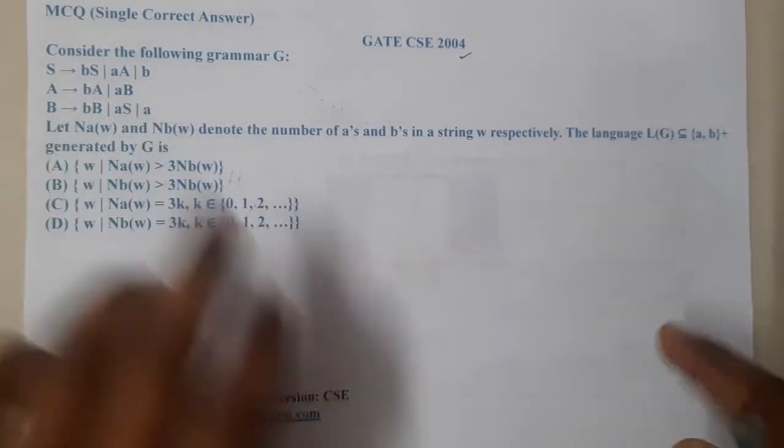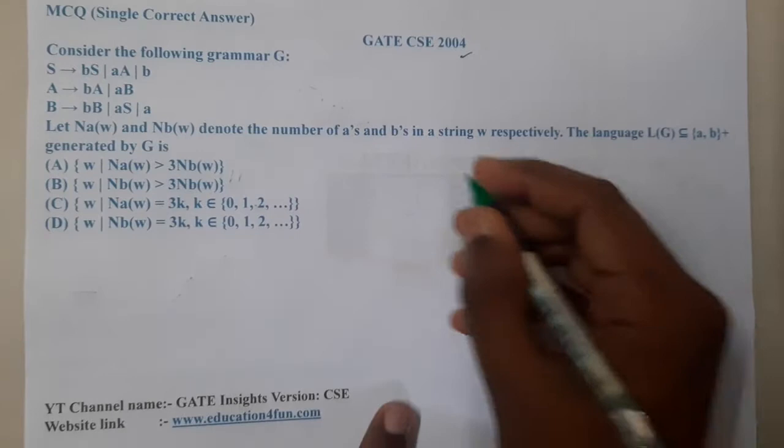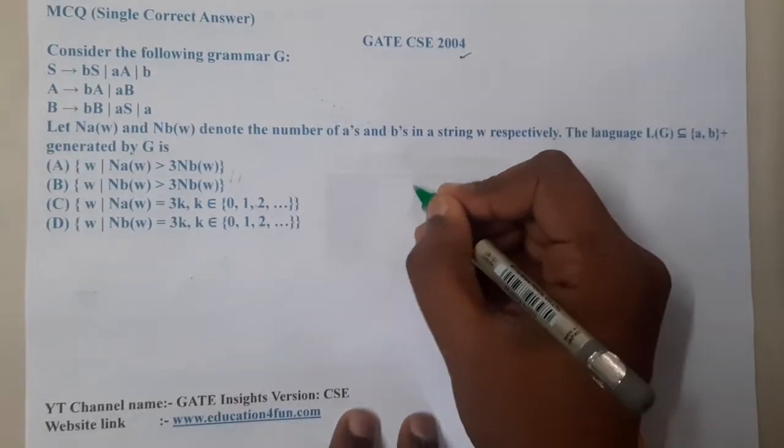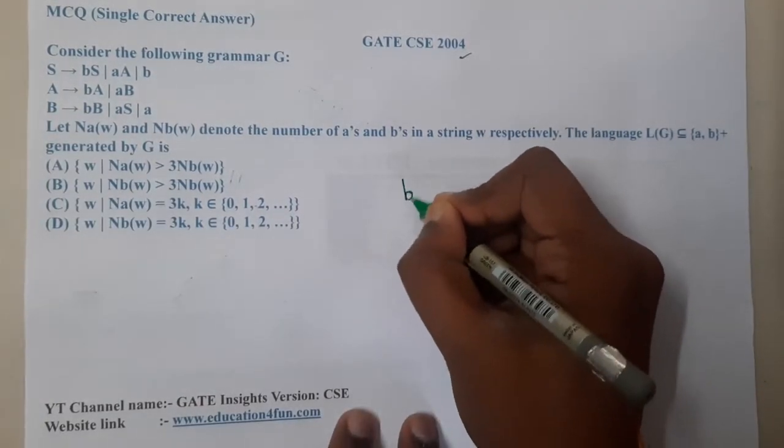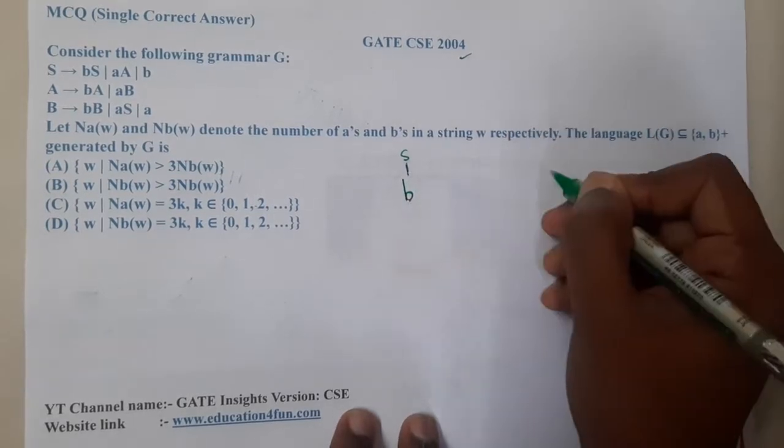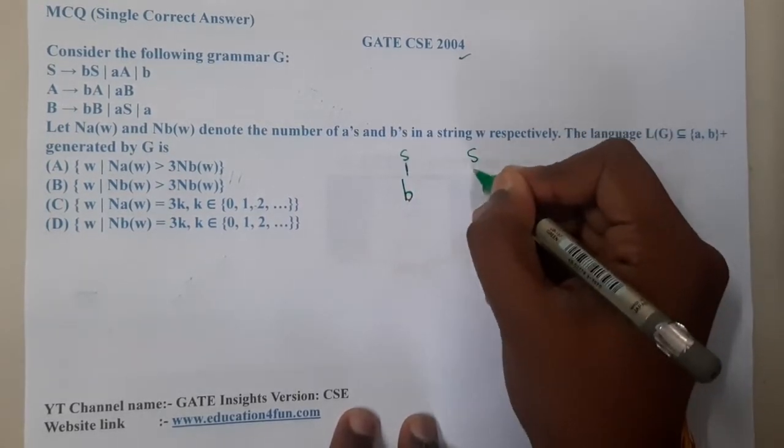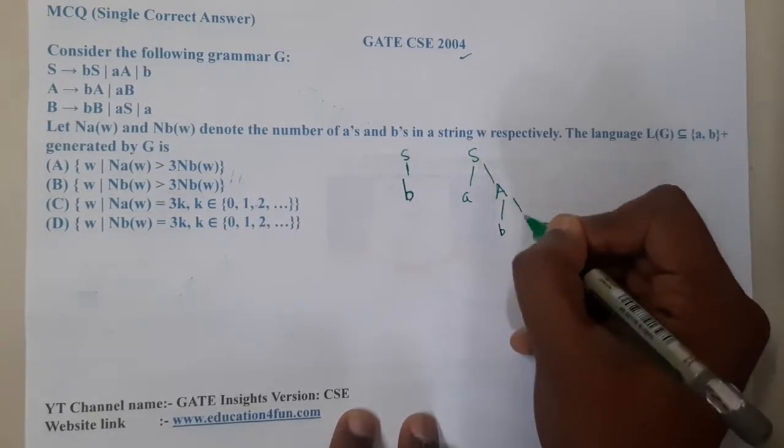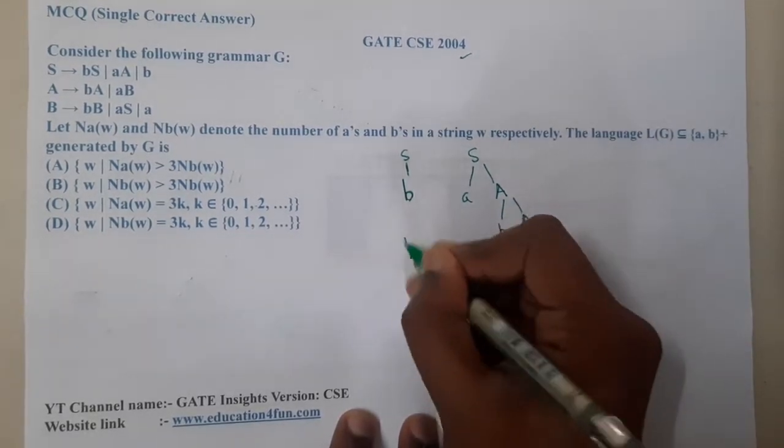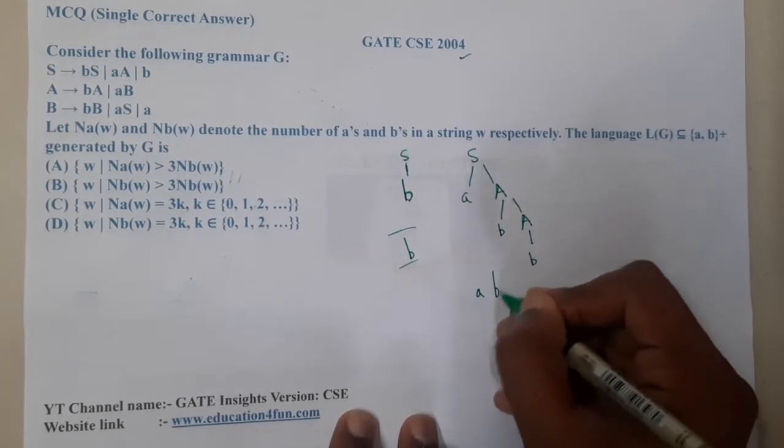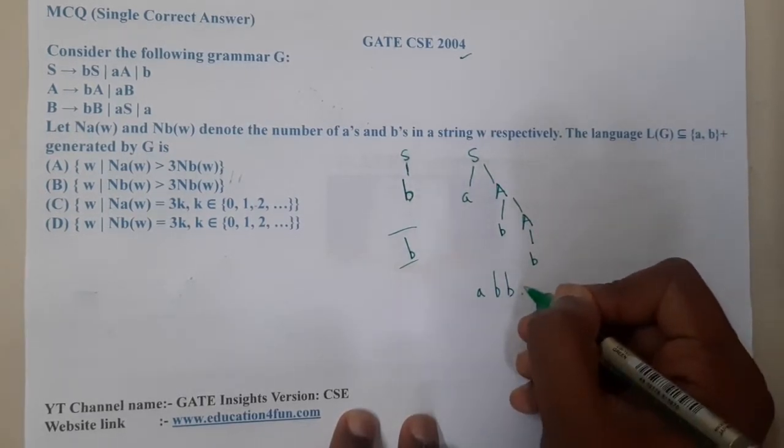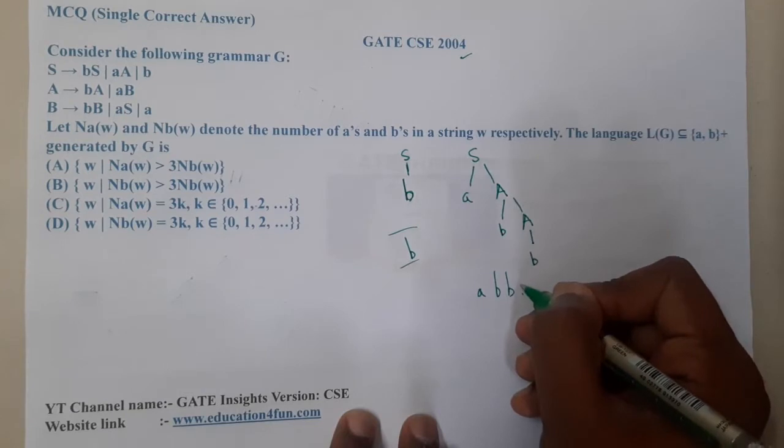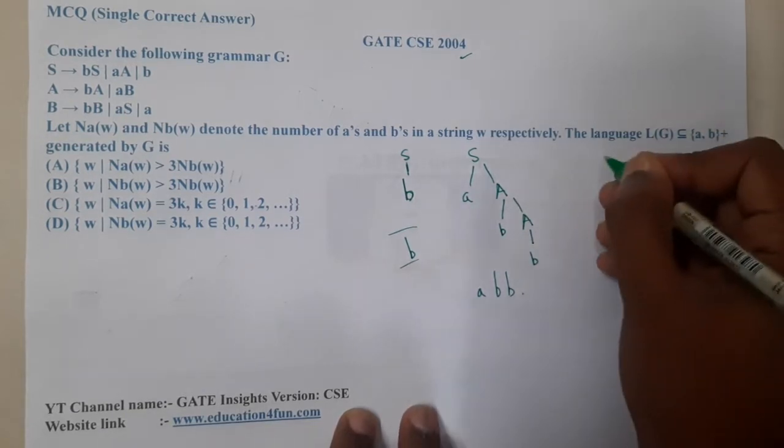So basically they gave this as a grammar. Let us generate some small examples. If I want, I can generate a small b directly from S. From S, I can generate in this way and I can generate b a and from here I can generate b. So basically I can generate b, I can generate a double b. Can I generate single b? Yes, I think we can go for b in this way.